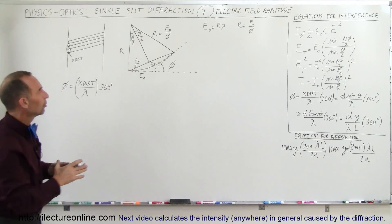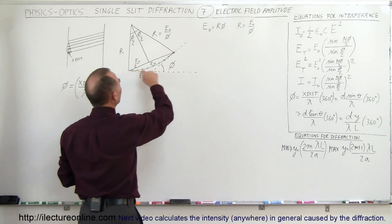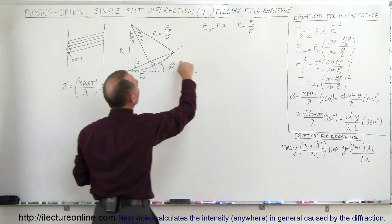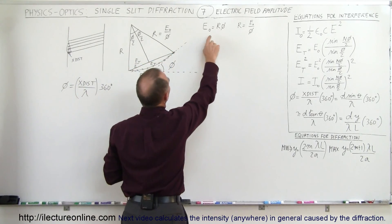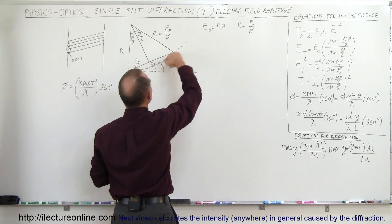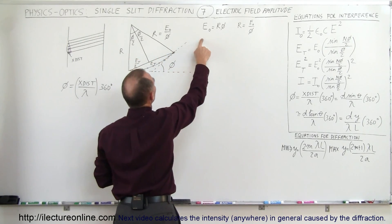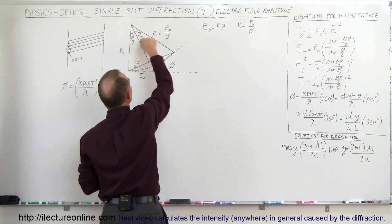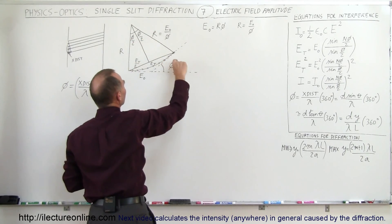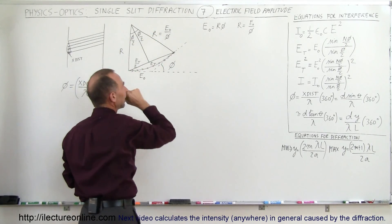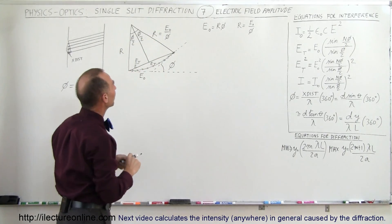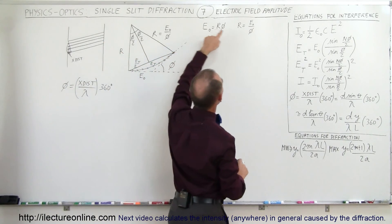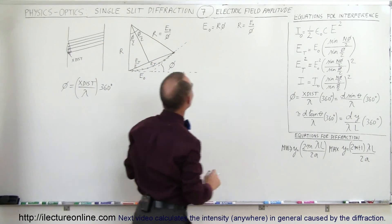Using simple geometry, we realize that this is an arc length. The arc length E-naught is equal to the radius r times the angle phi. This angle phi here is the same as this angle phi on the diagram. So the radius of this arc can be written as E-naught divided by phi.